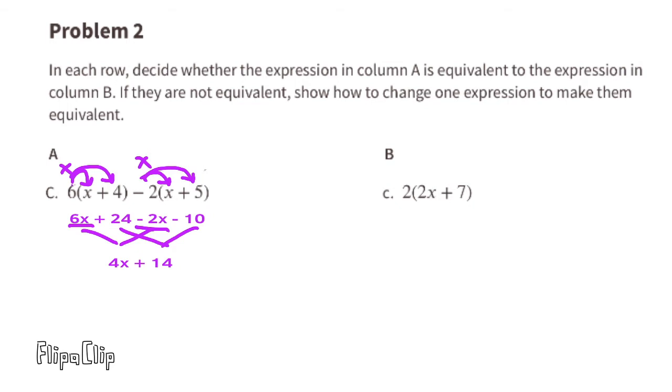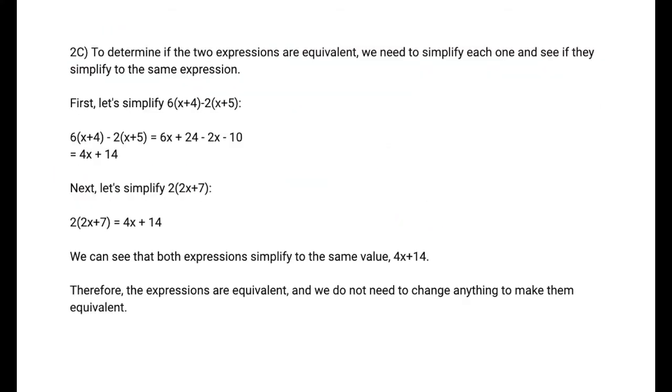Now let's take a look at the expression on the right. 2 times 2x is 4x, and 2 times a positive 7 is a positive 14, so these two expressions are equivalent. 4x plus 14 and 4x plus 14. I've written out the steps for problem 2C. You can pause the video if you need to.